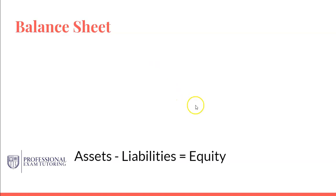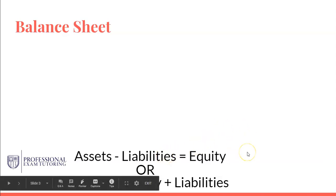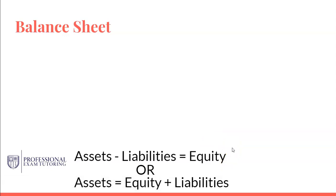You can also rewrite this formula by switching it around. Going back to some high school math, if you want to isolate assets on the left-hand side you need to bring liabilities over to the right-hand side. In order to do that you add liabilities over, so what you get is: assets equals equity plus liabilities.